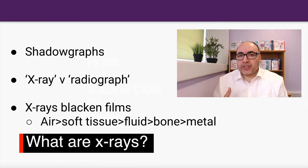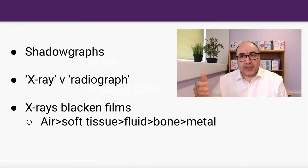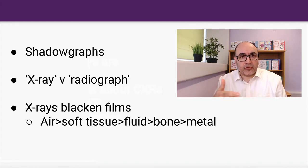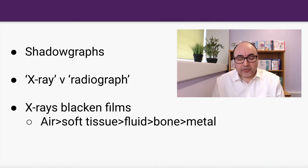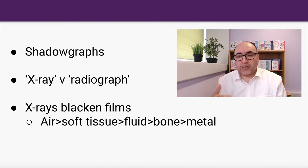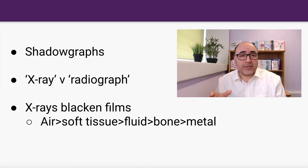Chest x-rays are essentially shadowgraphs. X-rays fly through the air and land on a film, leaving a shadow, and depending on what material is between the x-ray source and the film, it leaves a shadow of varying density. Some pedantic people don't like the word x-rays for what you read clinically — what we see in everyday clinical practice are radiographs. The more dense something is, the whiter it appears: metallic objects like a hip replacement, pacemaker, or dental filling look very white, then bone, then soft tissue and fluid.